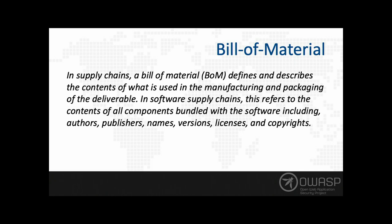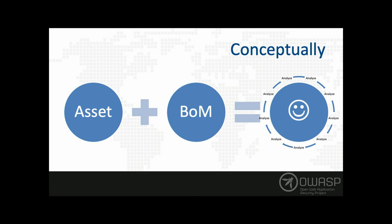So what is a software bill of materials? It's just a list — a list of ingredients that our software, or an IoT device, or a pacemaker, whatever we are working on, contains. Conceptually, Dependency Track works like this: you have an asset — a piece of software, a microservice, a pacemaker — you create a bill of materials describing all the ingredients and you put it into Dependency Track, where it will constantly monitor it whether you're building that software or not.